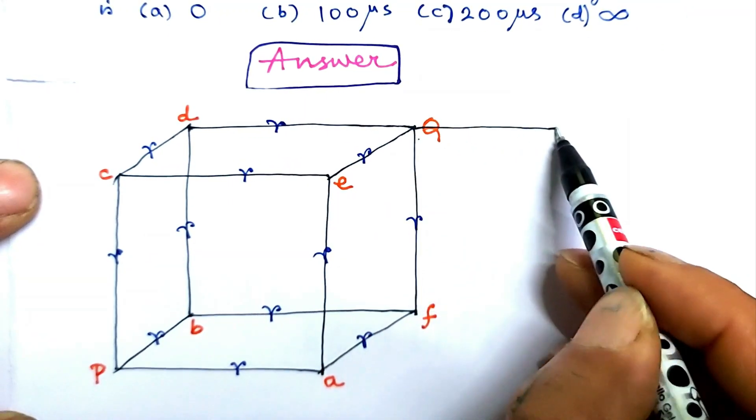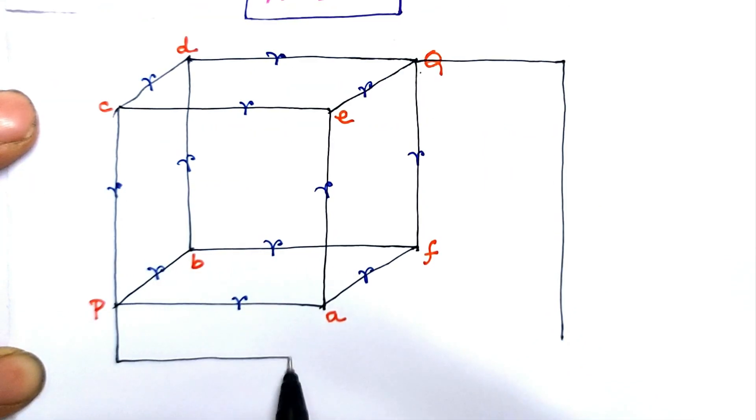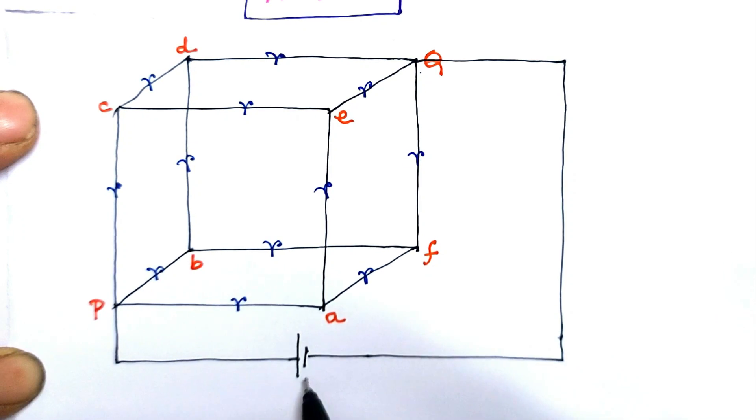And point q is connected to the diagonally opposite point p through this battery of emf v. Current from battery is...